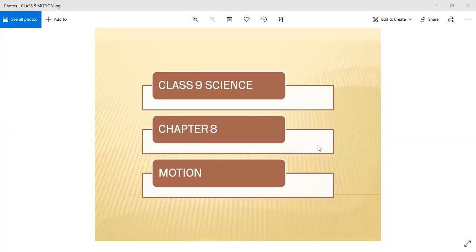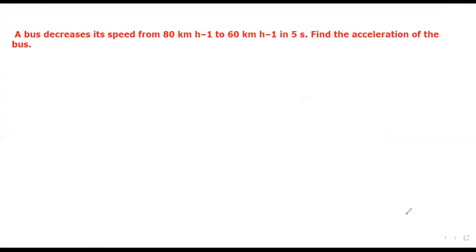Hello students, we are going to class 9th science, chapter number 8, motion. Today we will do some numericals from NCERT. In the previous session, we covered the three equations of motion: V = U + AT, S = UT + ½AT², and V² - U² = 2AS. Using these equations, we have two numericals. Let's start.